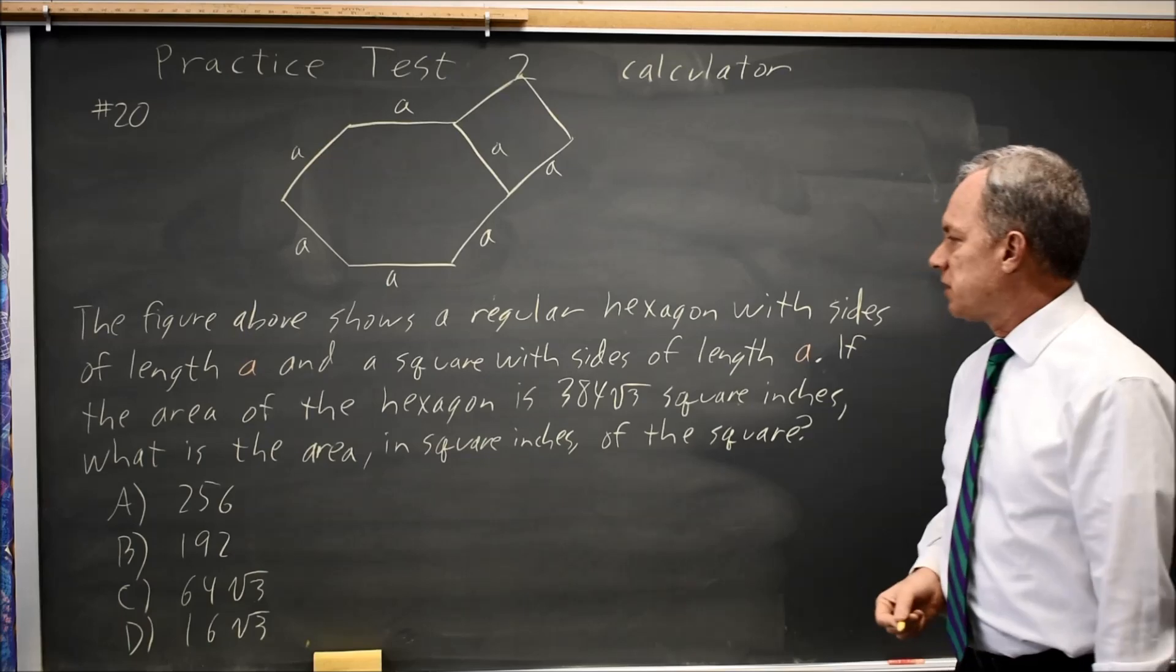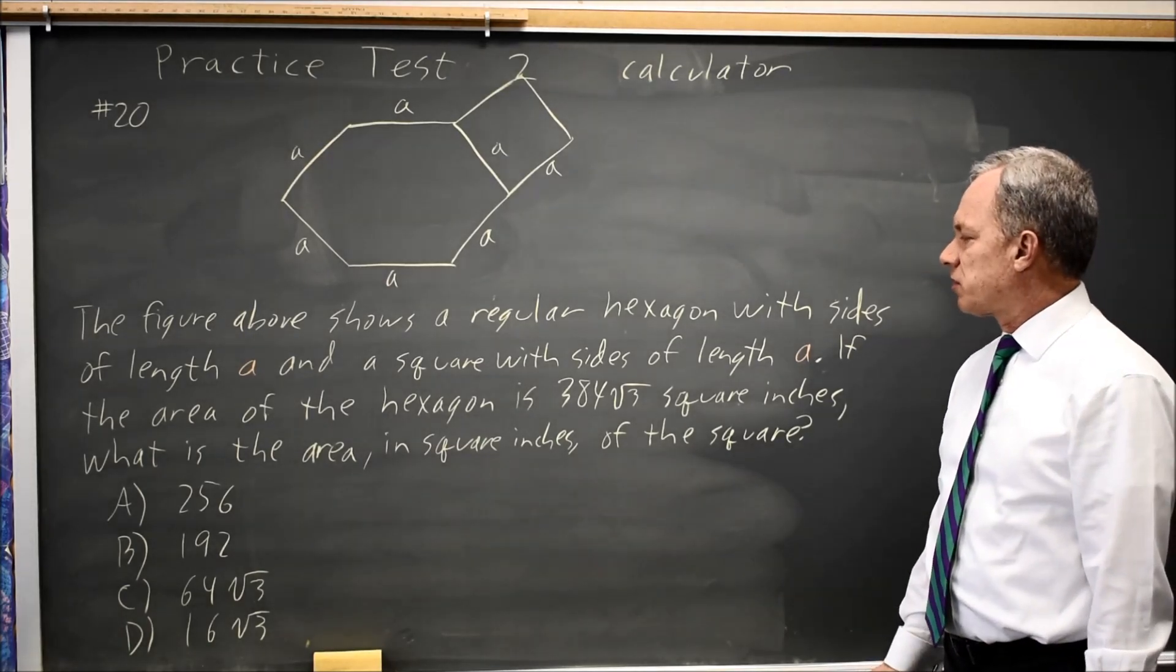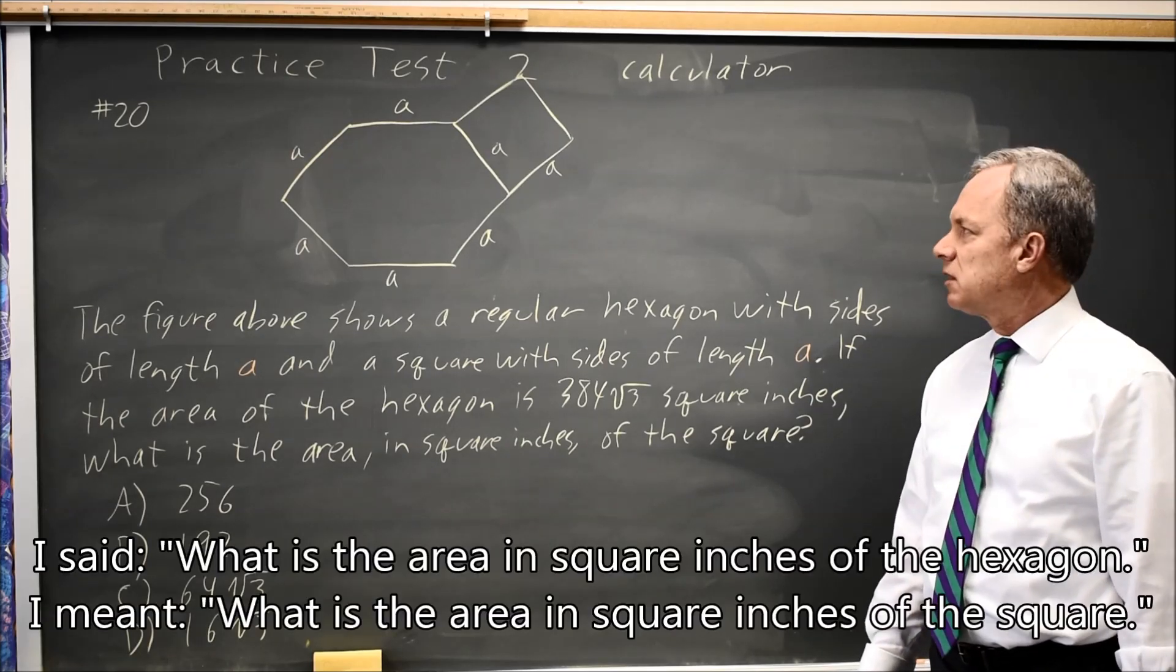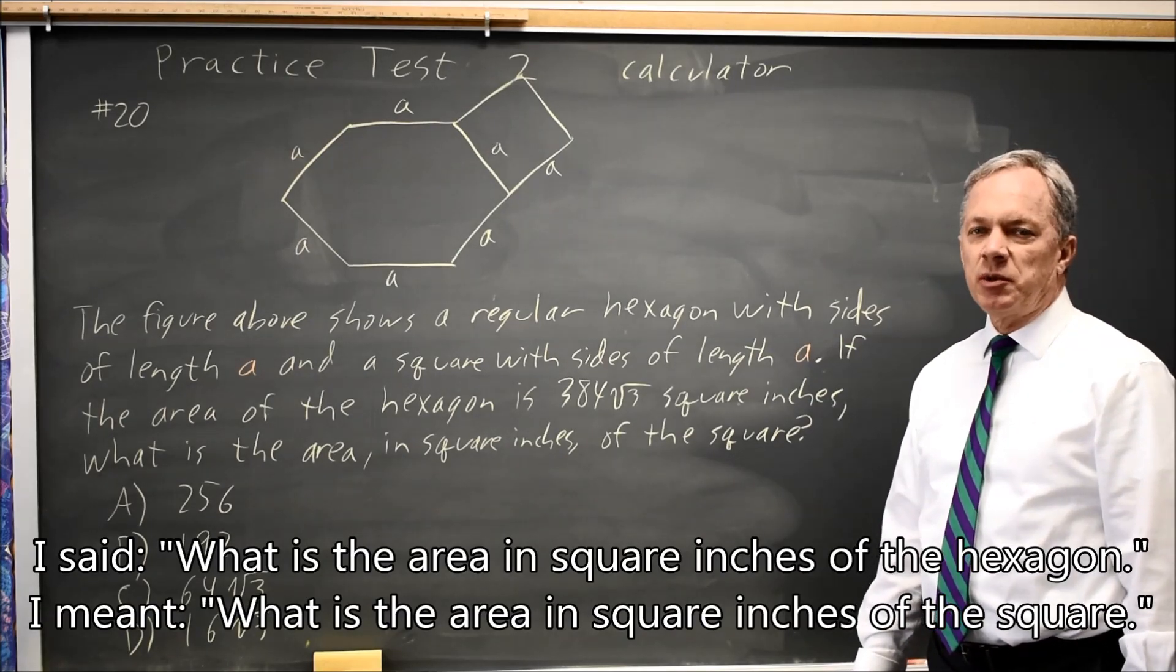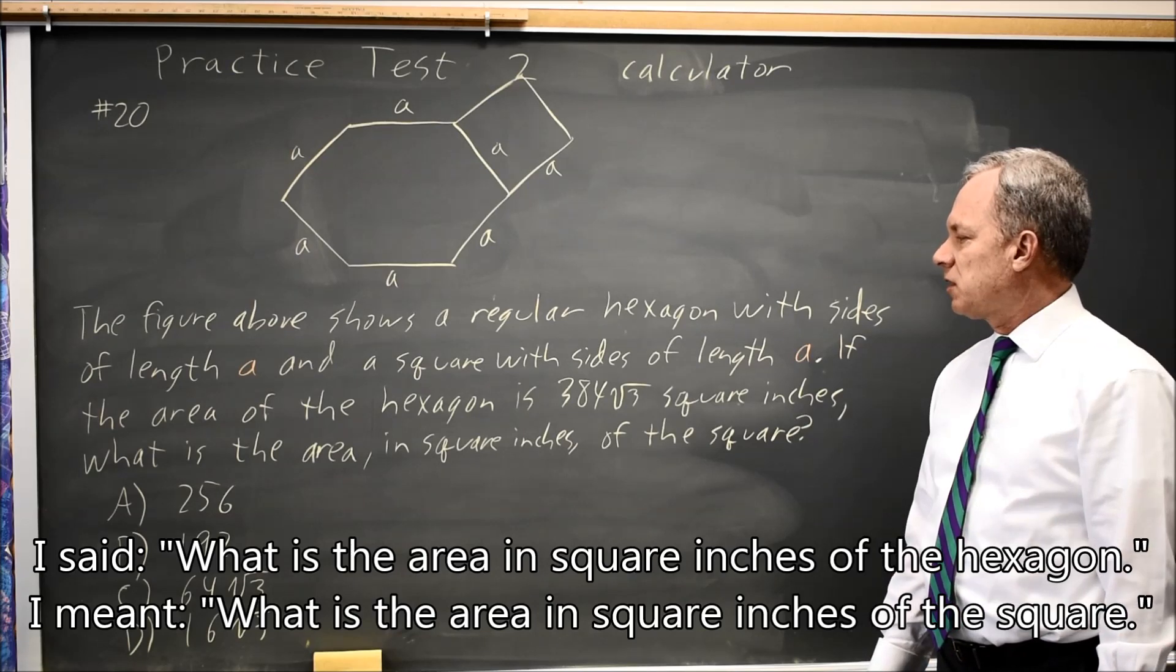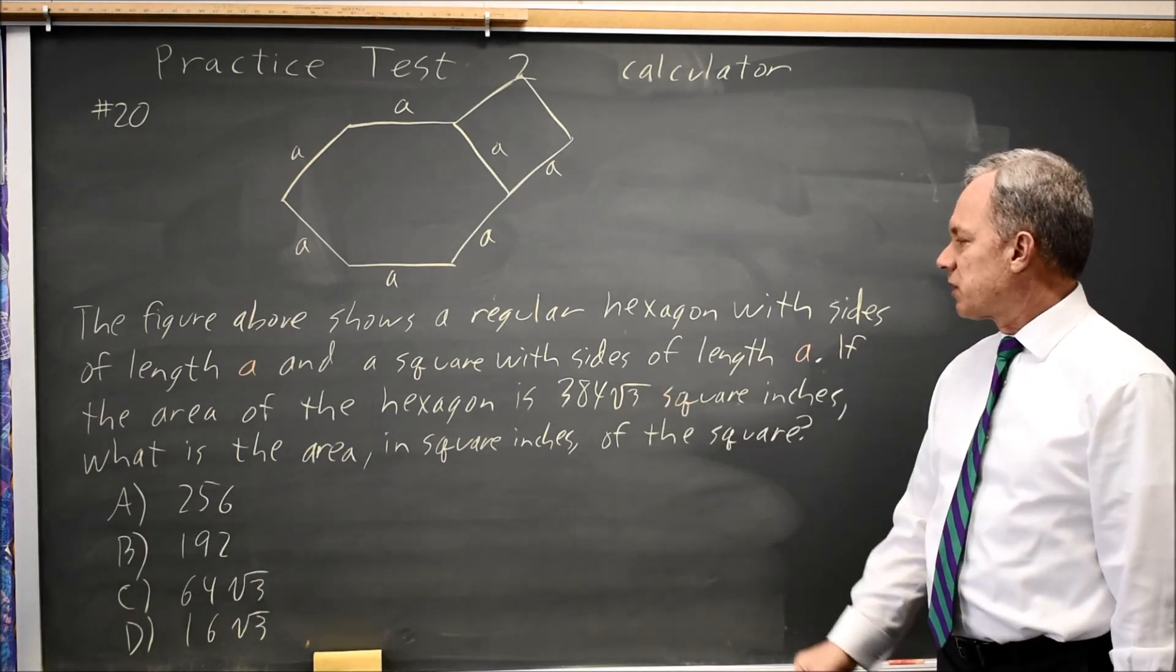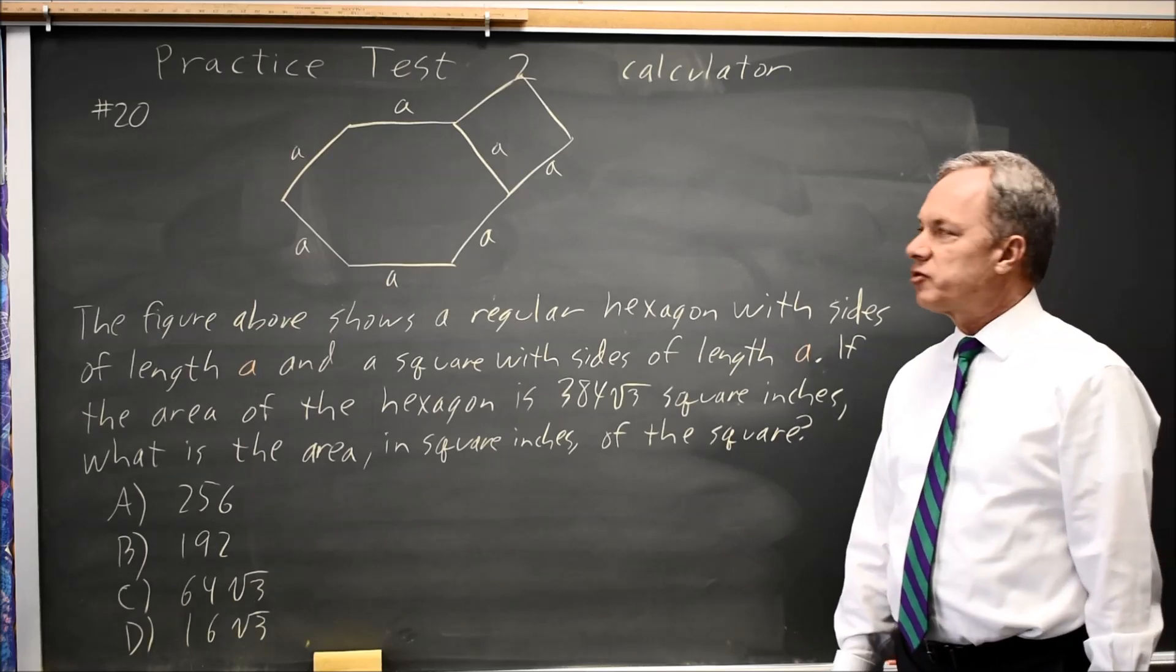The hexagon area is 384√3 square inches. What is the square's area in square inches? There's an algebraic way to find the exact area in terms of A, set it equal to 384√3, and solve for A.